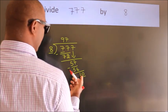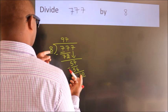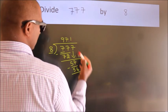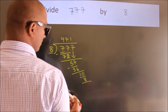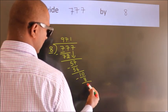A number close to 10 in the 8 table is 8 once, 8. Now we subtract. We get 2.